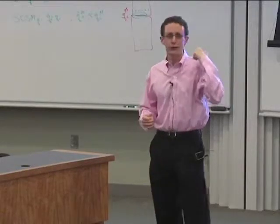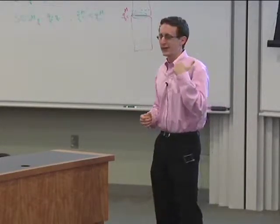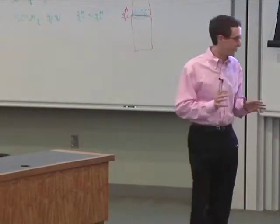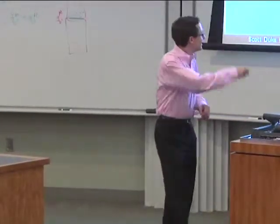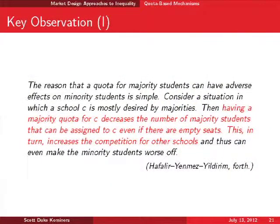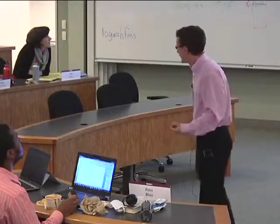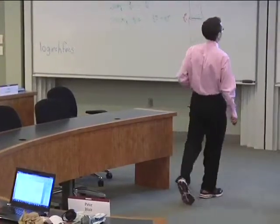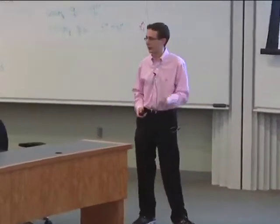Having a majority quota for C decreases the number of majority students that can be assigned to C, even if there are empty seats. This causes majorities to go and compete for other schools — that's the core problem. And that's what motivates the theory of affirmative action with minority reserves.